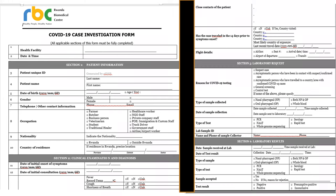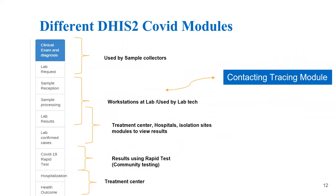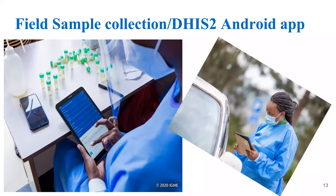We were fortunate that there was a global COVID module available, which we took and contextualized to Rwanda's needs, then linked it with the tablet. The modules customized in the system included clinical exam and diagnosis, lab requests, sample reception, and sample processing. We assigned user groups accordingly — sample collectors only had access to their forms and could not see lab modules. We also had modules for confirmed cases, COVID rapid testing, hospitalization, and health outcomes.